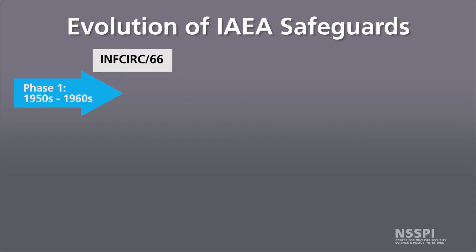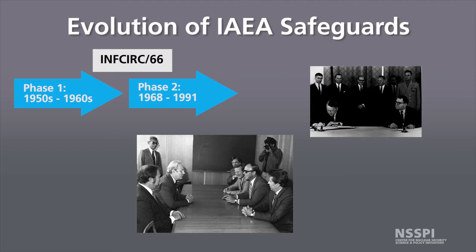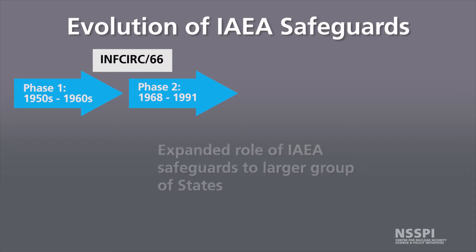Then from 1968 to about 1991 — beginning when the NPT, the Non-Proliferation Treaty, was signed — the IAEA was legally tasked to apply safeguards on all nuclear materials in non-nuclear weapon states party to the NPT. This expanded the role of IAEA safeguards. Before, with just INFCIRC/66, safeguards were applied only where agreed to between states and the IAEA, whether required by a supplier state or not, and there were several scenarios when they could have been applied.